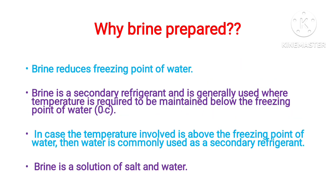The purpose of using brine is that it reduces the freezing point of water. If we need a secondary refrigerant temperature below 0 degree Celsius, we should use brine. If we use pure water, it will freeze because water has a freezing point of 0 degree Celsius. So for getting temperatures in the minus range, we use brine.